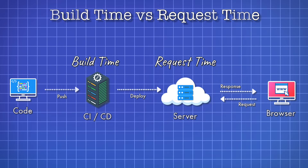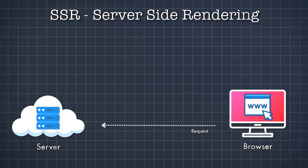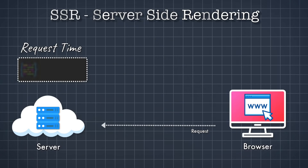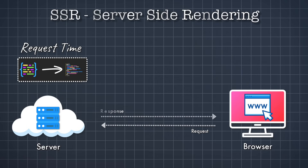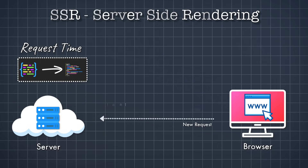With these concepts out of the way, let's take a look at the different rendering strategies. SSR stands for server-side rendering. With SSR, our content is rendered on the server at request time. This means that when a user requests a page and the server is processing the request, it renders our components to get the generated HTML and sends it back to the client. This approach is particularly useful for dynamic content that needs to be up to date, so when a new request comes in, new content is generated and sent back.